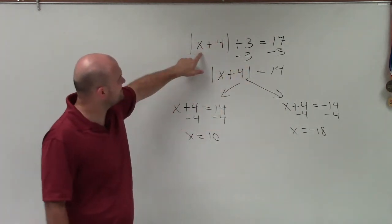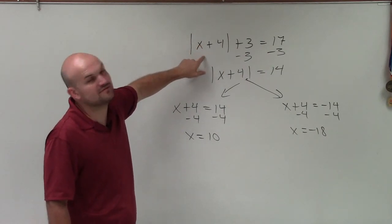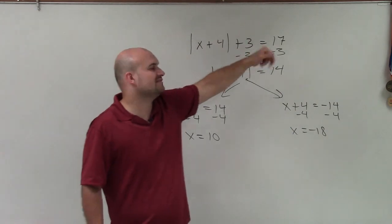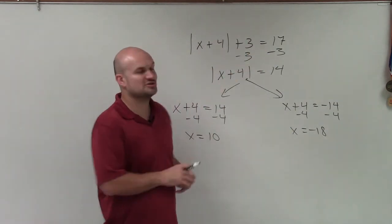Now negative 18. Negative 18 plus 4 is negative 14. Absolute value of negative 14 is positive 14. Plus 3 is 17. 17 equals 17. Good. Both solutions work.